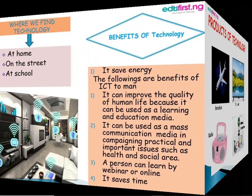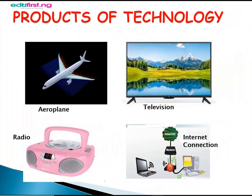Products of technology include all the things we have mentioned — those found at homes, on the street, and in schools — as well as things in other areas of life like churches, police stations, and everywhere around us. All things made by man are products of technology.